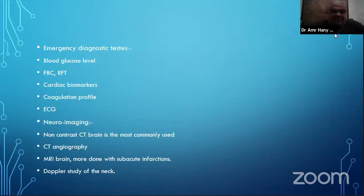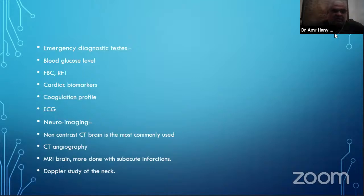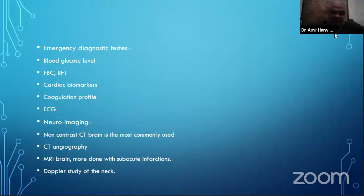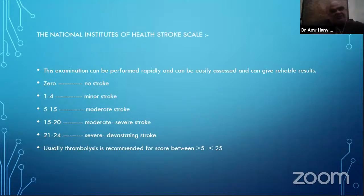Emergency diagnostic tests for acute ischemic stroke: blood glucose level, full blood count, renal function tests, cardiac biomarkers, coagulation profile, and ECG. Then proceed to neuroimaging: non-contrast CT brain (most commonly used), CT angiography, MRI brain (more useful for sub-acute infarctions), and Doppler study of the neck.